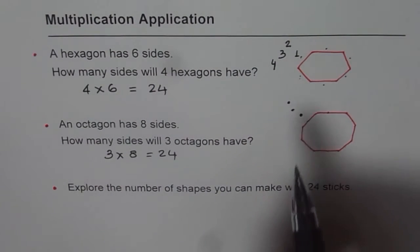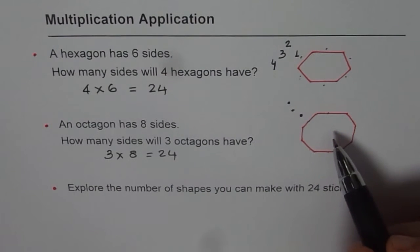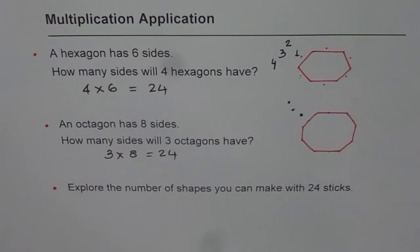These dots and these numbers help us to keep a track of the number of times we counted. Do you see that? So it helps, right? We don't have to draw three octagons in this case or four hexagons in the previous case, right? We get to repeat it addition.